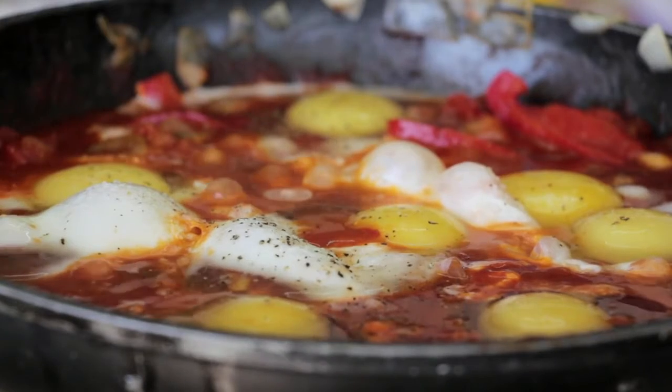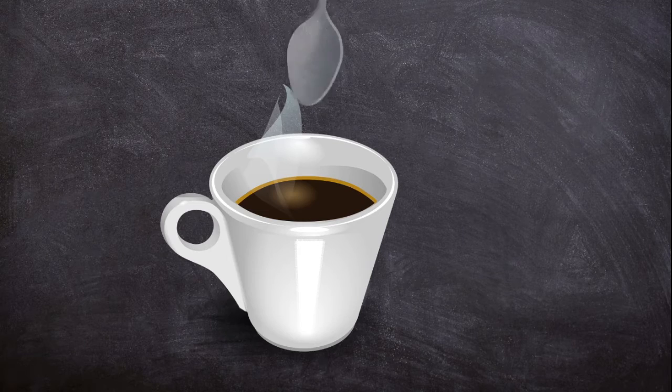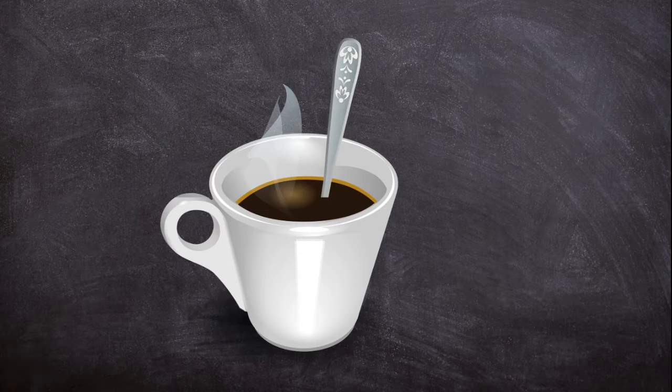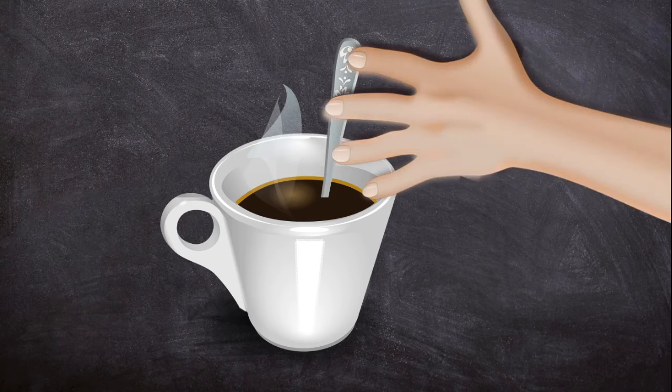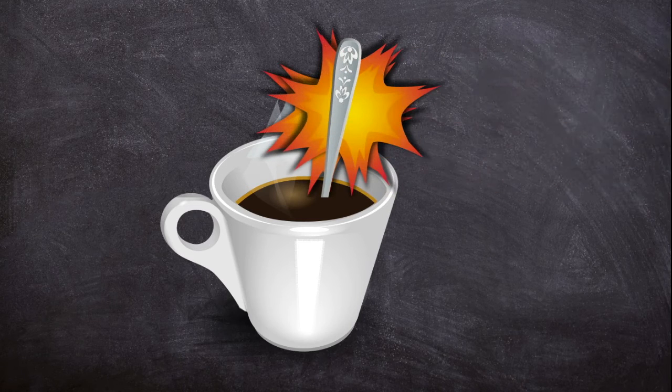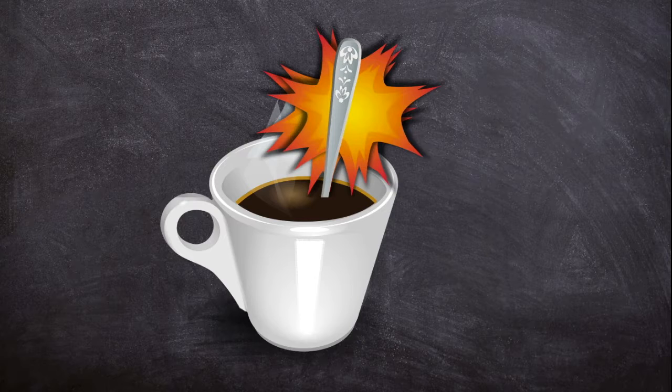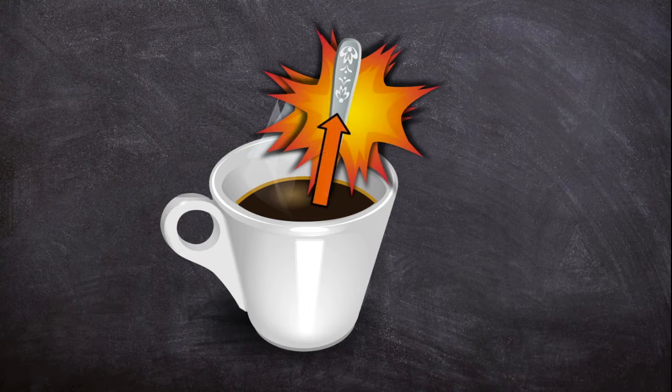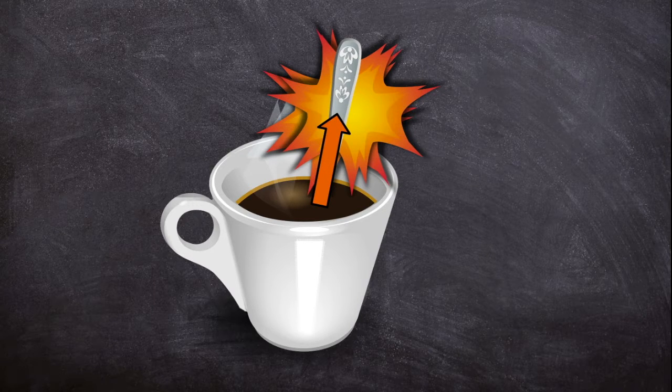If you place a metal spoon into a mug of hot cocoa for a few minutes and then touch the spoon, it will be hot. That is because the heat from the cocoa has transferred or moved into the spoon.